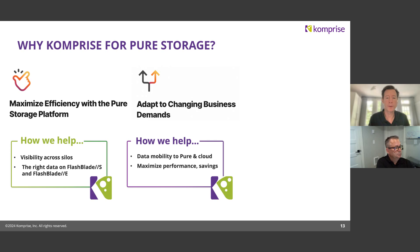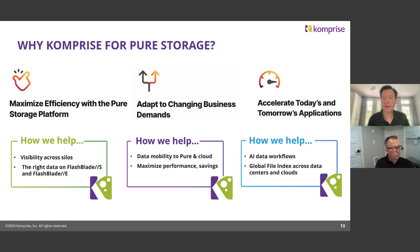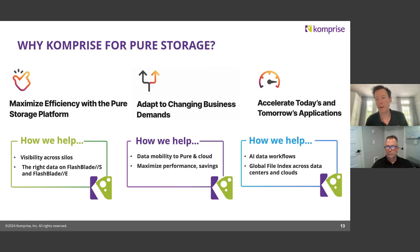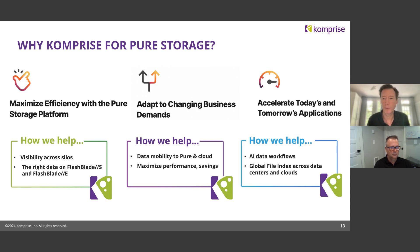Bringing it back to the themes of Accelerate Conference: for maximizing efficiency, Comprise gives you visibility across silos, right-places data, and makes sure high-performance data is running in the right spot while data you access less frequently is on a lower-cost tier. For adapting to business change and demand — data mobility to Pure and to cloud services — Comprise partners closely with AWS and Azure. We're seeing hybrid environments, and we want to make sure you're optimizing all environments to maximize performance and savings.